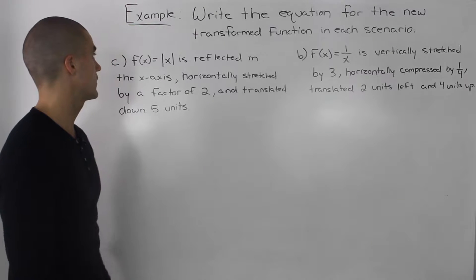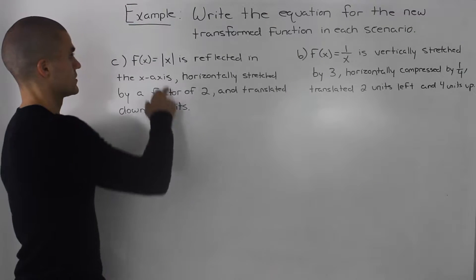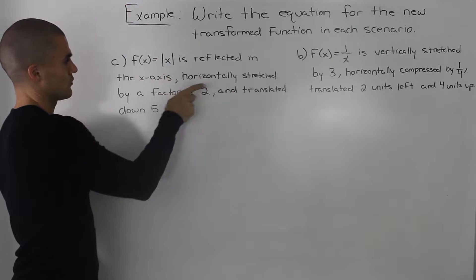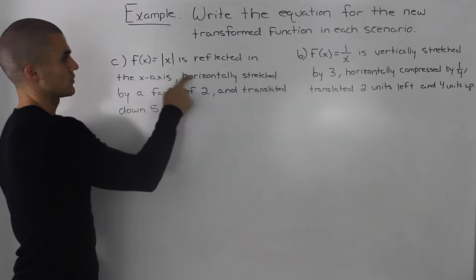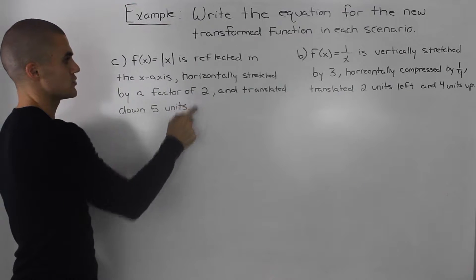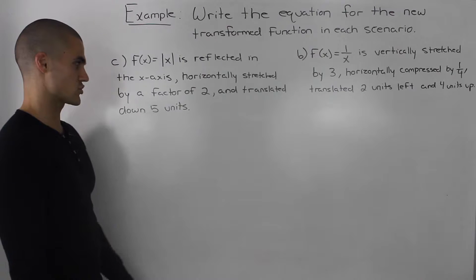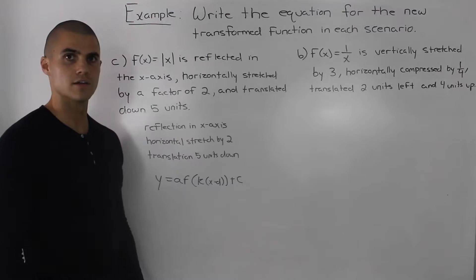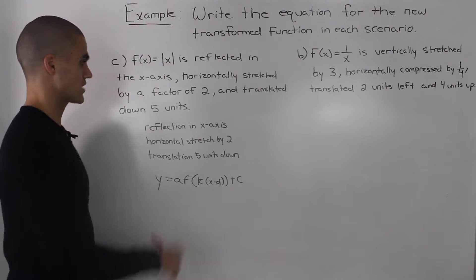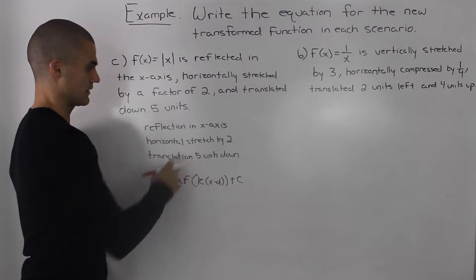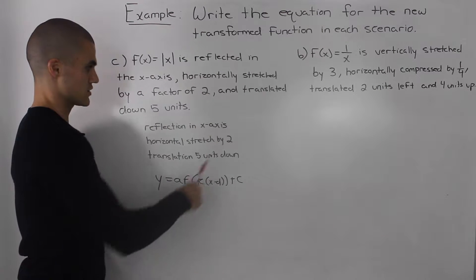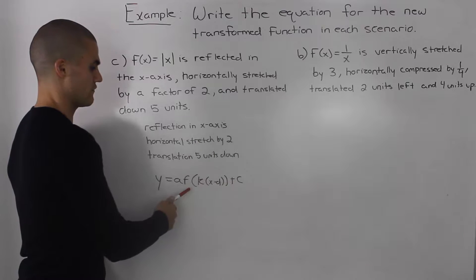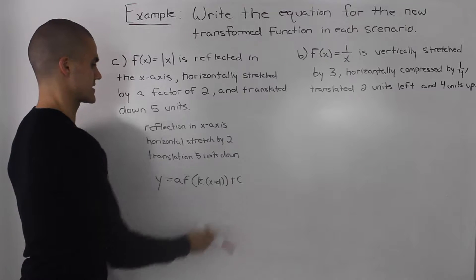Moving on to the next scenario, we have to take the absolute value function, reflect it in the x-axis, horizontally stretch it by a factor of 2, and translate it down by 5 units. As we did in the previous scenarios, I wrote out all these transformations in a list, so let's go through each of them and see how they affect the letters a, k, d, and c.